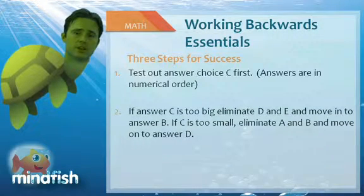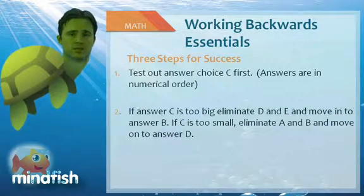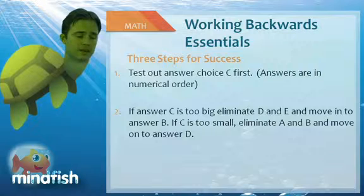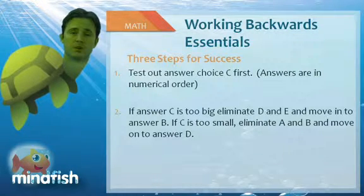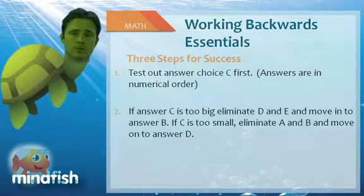If C seems too big, generally you want to try A or B. If C seems too small, generally you're going to try D or E. And that's actually step two, is just making the move to either A or B or to D or E.